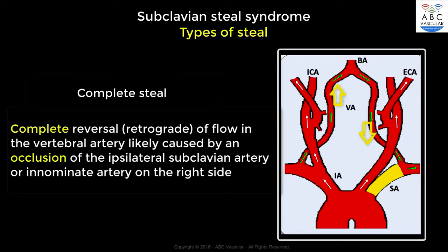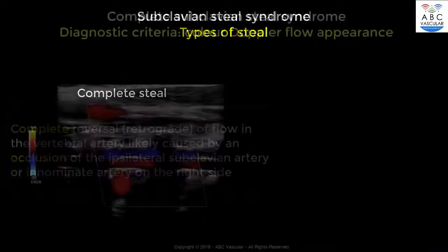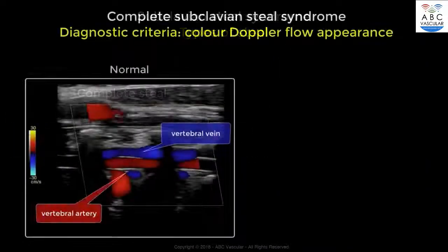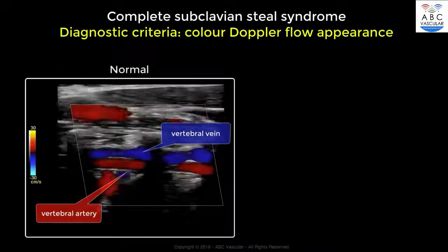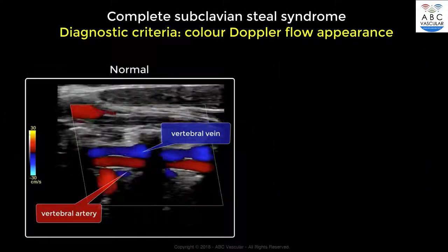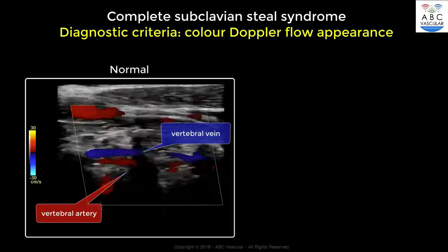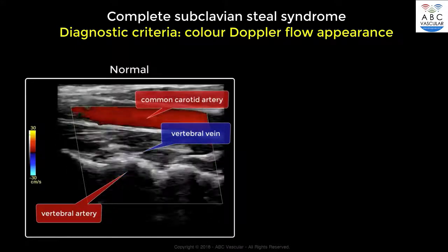The two main ultrasound diagnostic criteria used for the identification of a complete steal of the vertebral artery are the colour Doppler flow appearance and the pulsed wave Doppler waveforms of the affected vertebral artery.